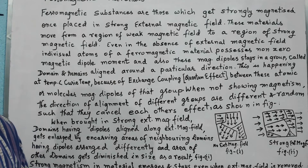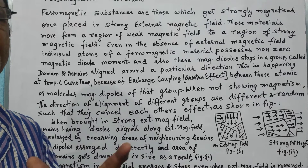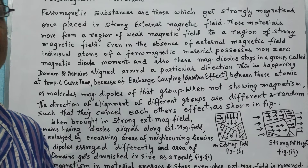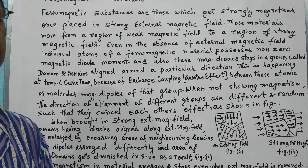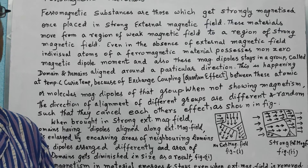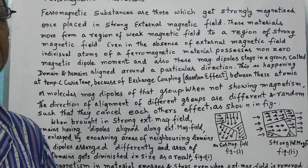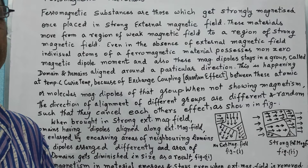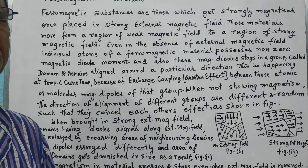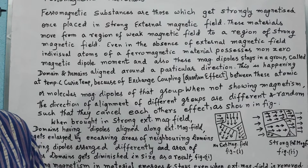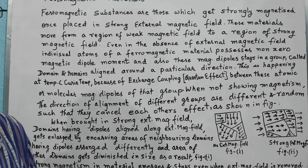A ferromagnetic material can be looked upon as if it is divided into different groups, and these groups are called domains. In each group, the individual atomic magnetic dipoles or molecular dipoles are non-zero for this material, even in the absence of an external magnetic field.